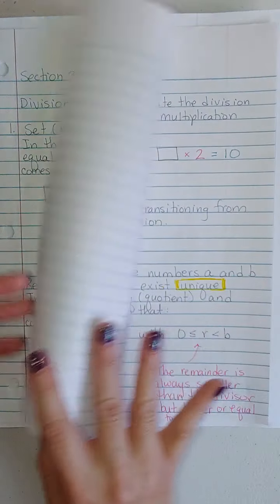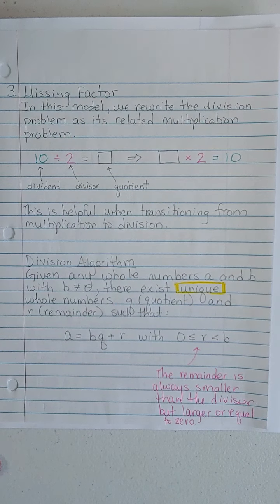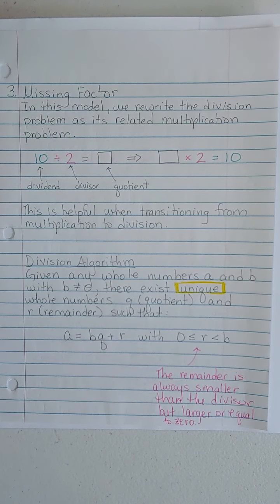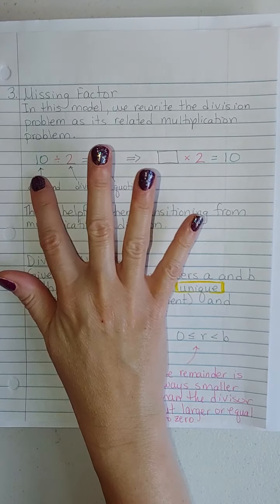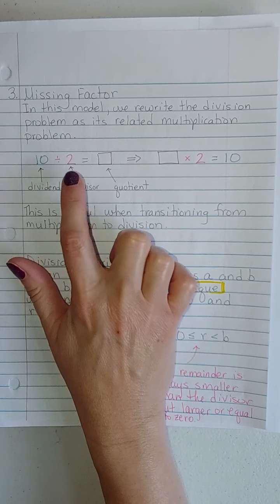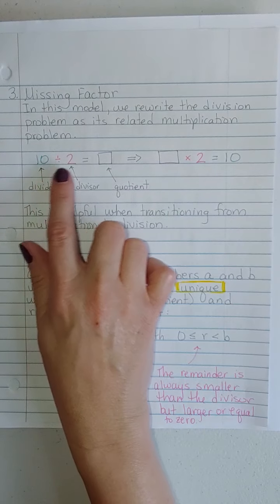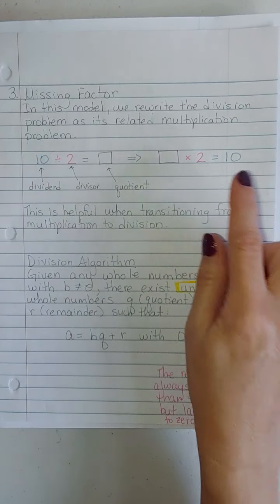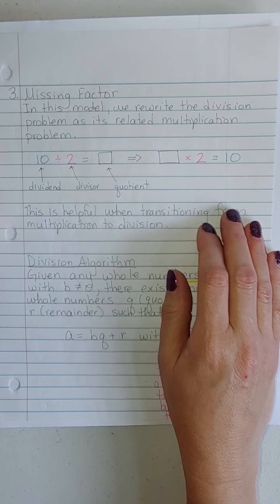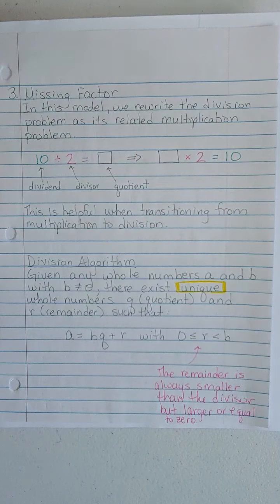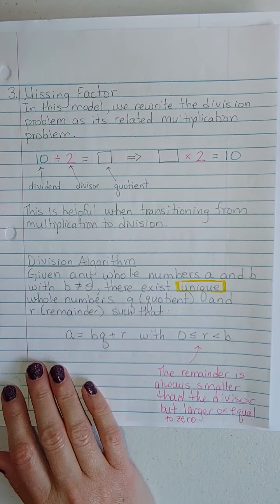The third one is missing factor. This is a really good one because it relates it back to multiplication. That's going to be really useful, because that's how a lot of kids are going to know their division facts. 10 divided by 2, they're going to think what times 2 is going to give me 10, or 2 times what is going to give me 10. It's helpful when transitioning from multiplication to talking about division.